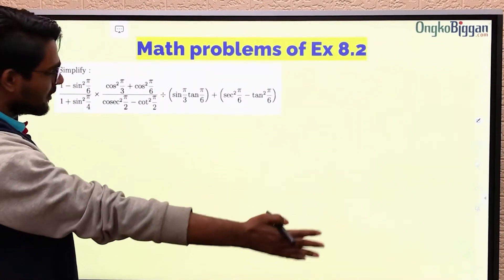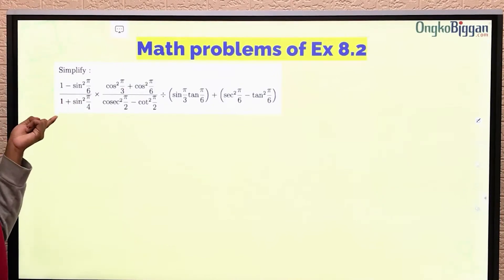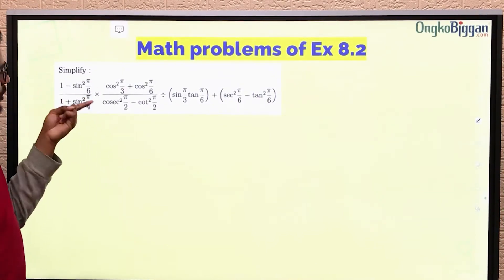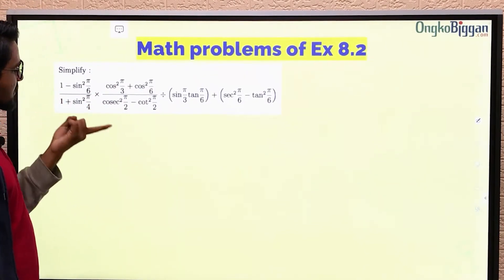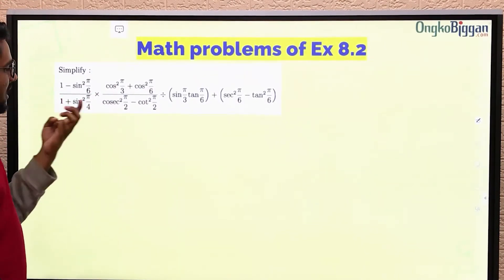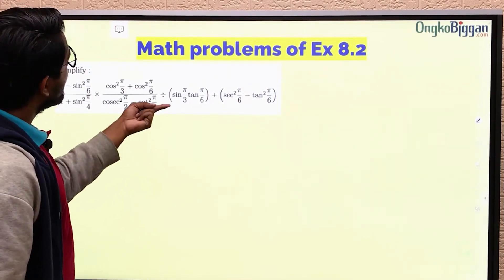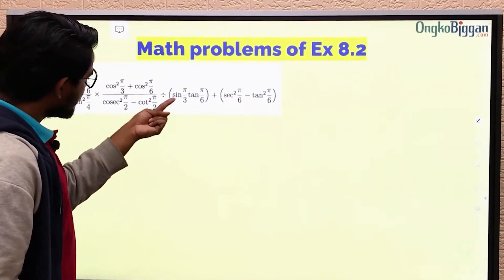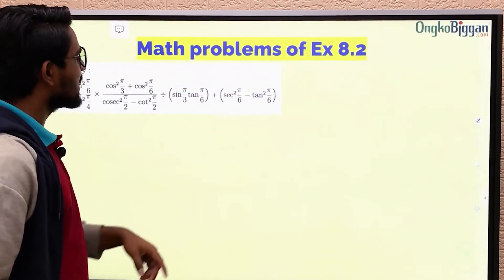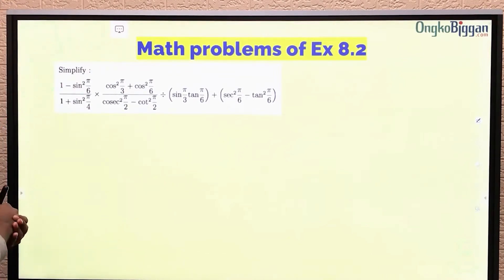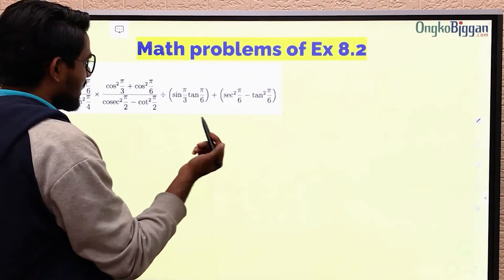We have this large math expression written as: (1 minus sin² π/6) divided by (1 plus sin² π/6), multiplied by (cos² π/3 plus cos² π/6 cos x), divided by (cos² π/2 minus cos² π/2), all divided by sin π/3 times tan π/6 plus sec² π/6 minus tan² π/6. We can see that we have two formulas here that we can use.